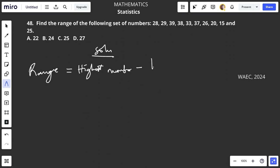minus the lowest. So you check in the data which of them is the highest. 39 is the highest, and which one is the lowest? The lowest is 15.